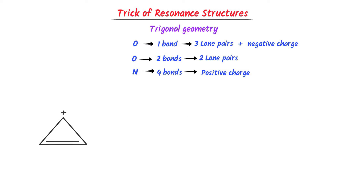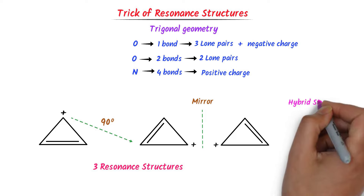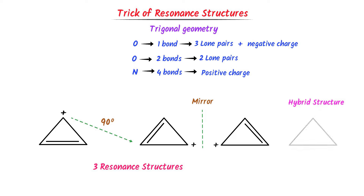Thirdly, consider this structure. Pause the video and try to draw its resonance structures. I rotate it 90 degrees clockwise and get this structure. I place a mirror in front and after reflection I get the third structure. There are three resonance structures of this molecule. For the hybrid structure, a double bond is present on each side and the net charge is positive on this molecule. Using this trick, we can easily draw the resonance structures of these molecules.